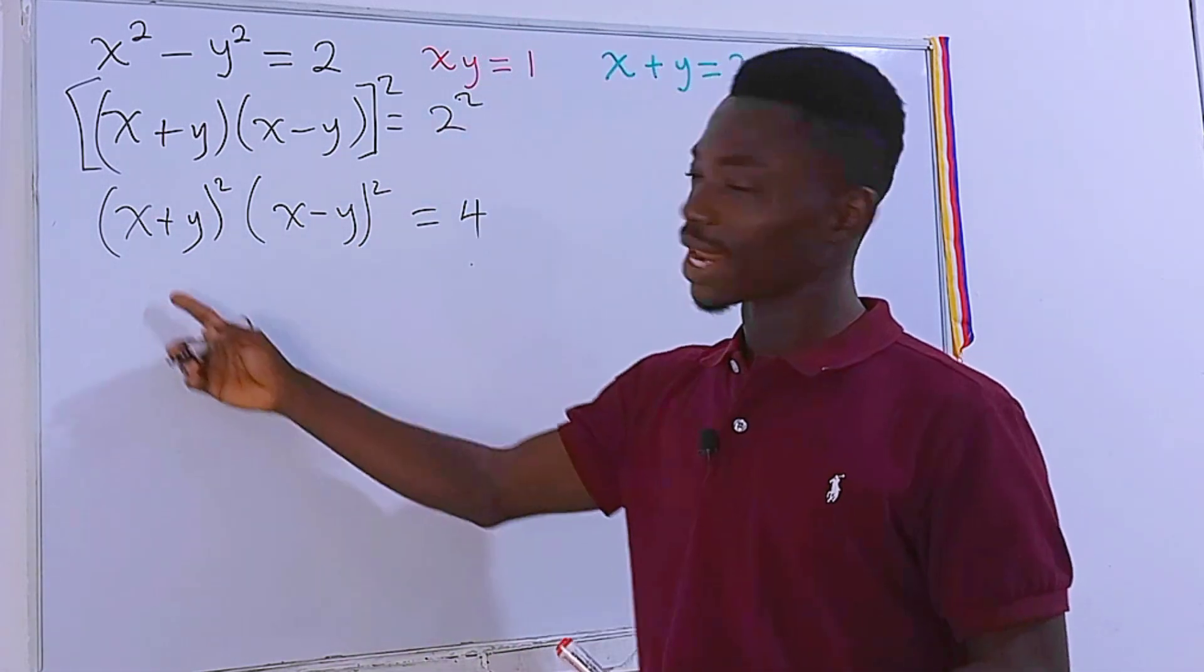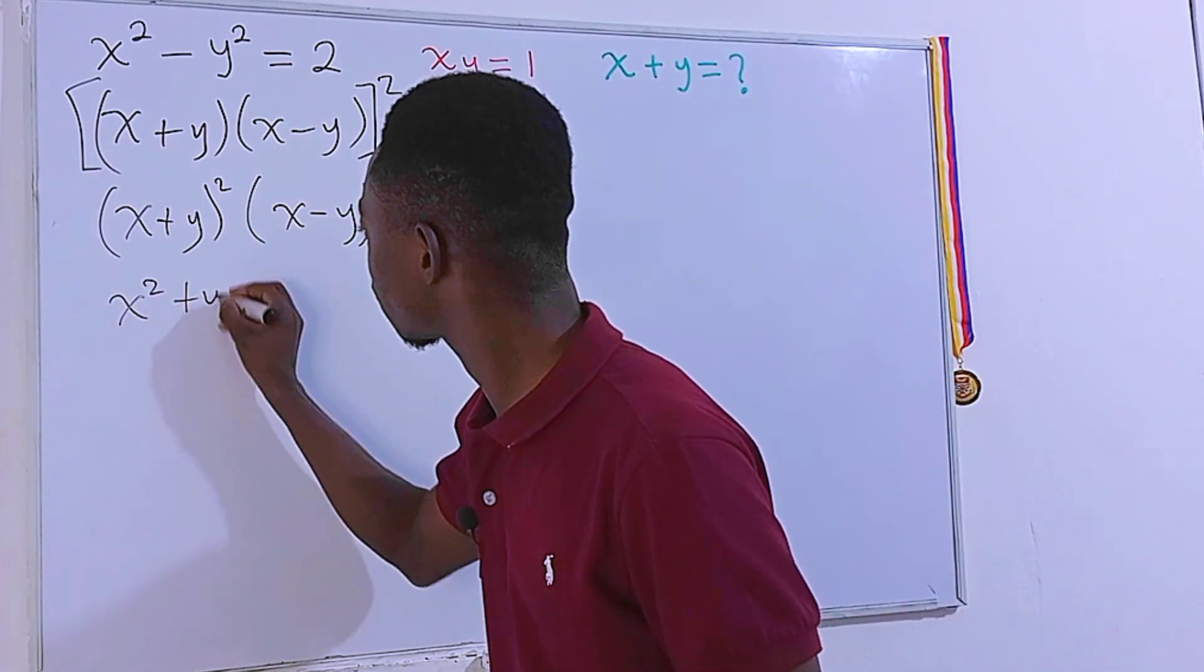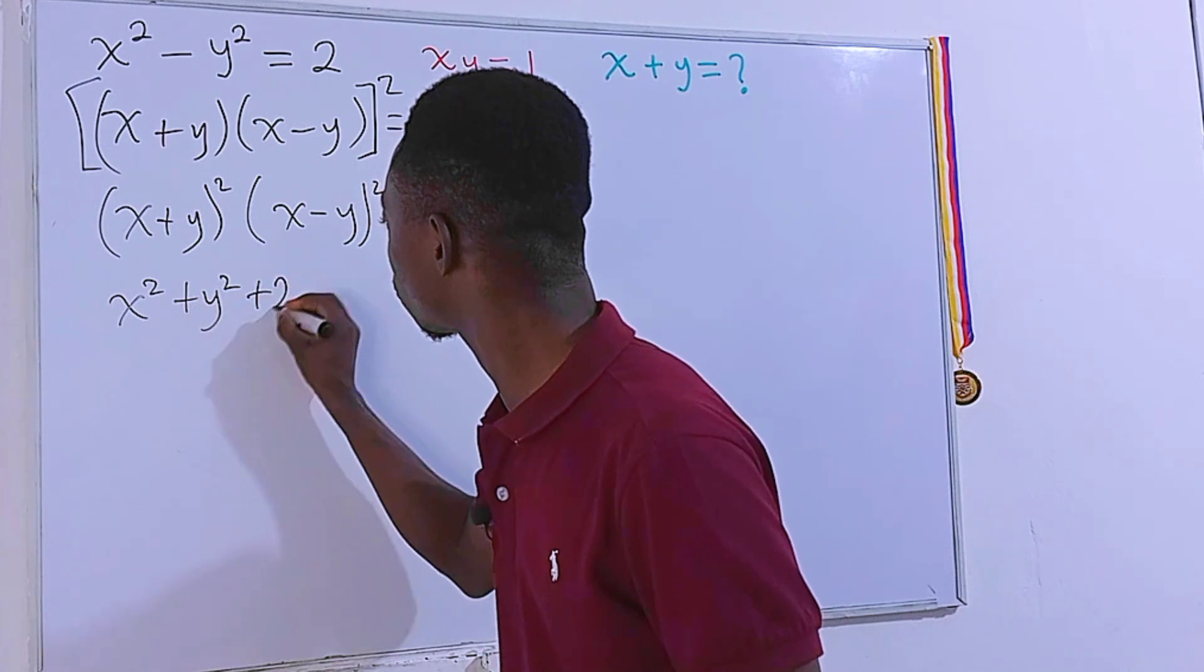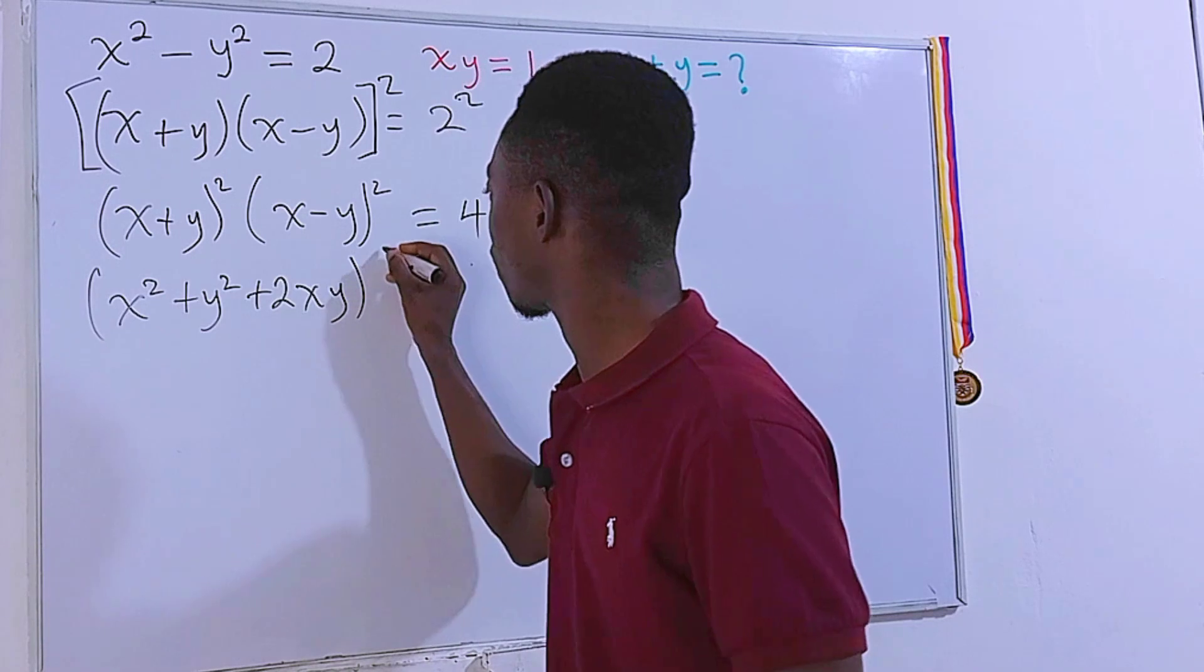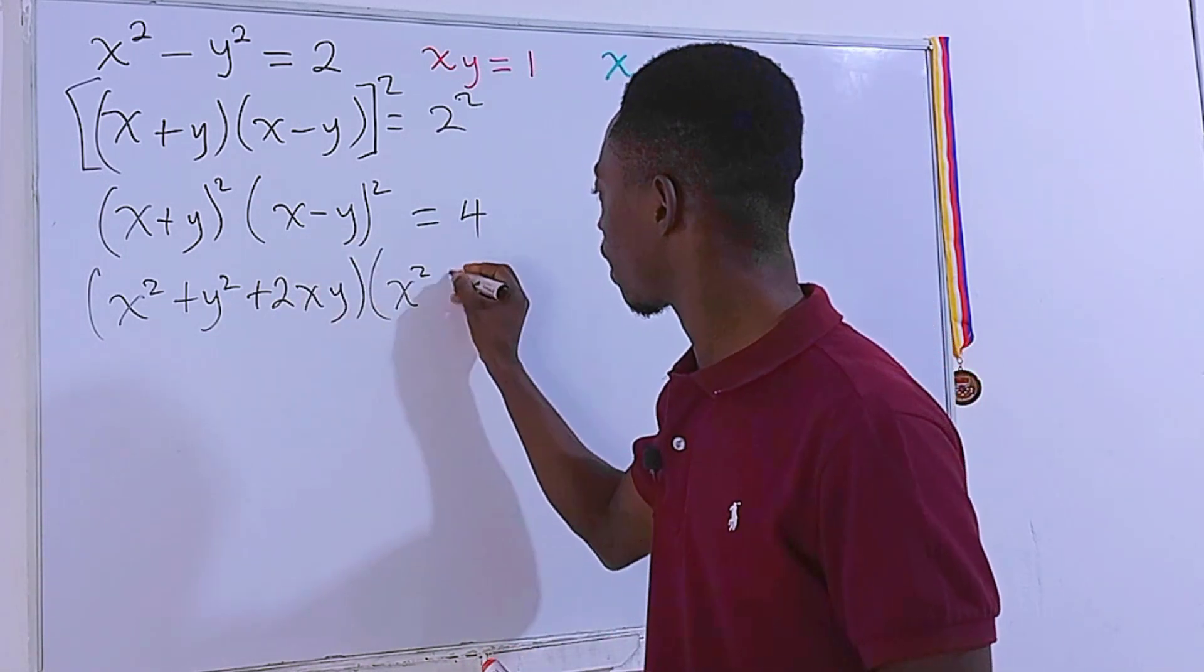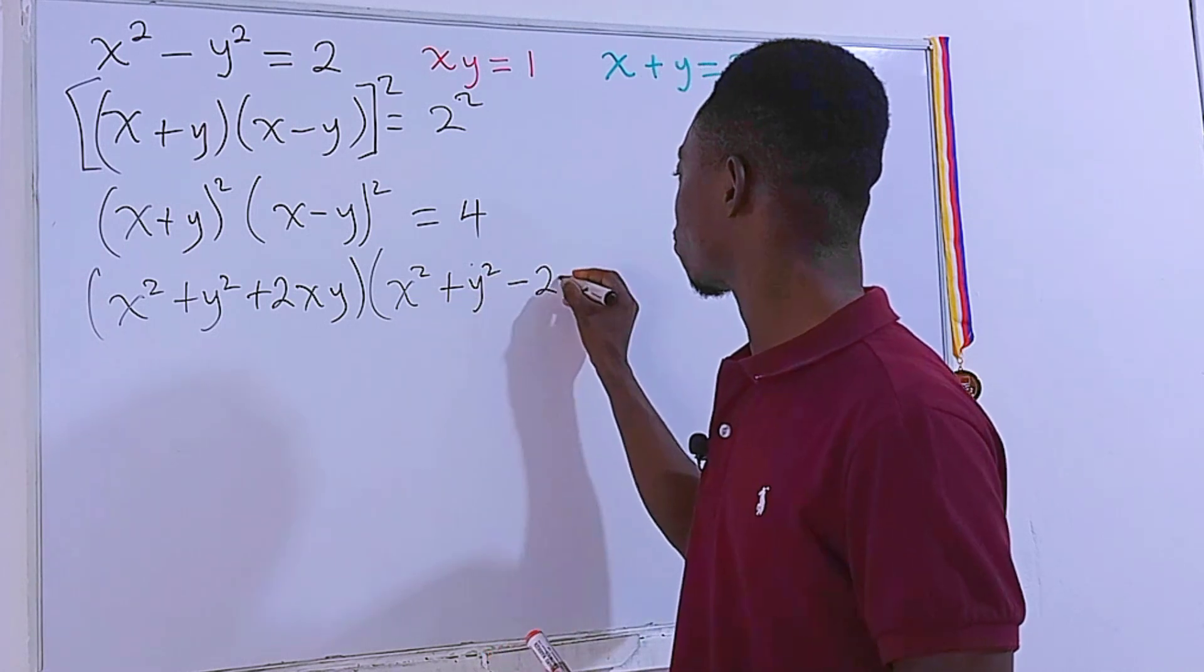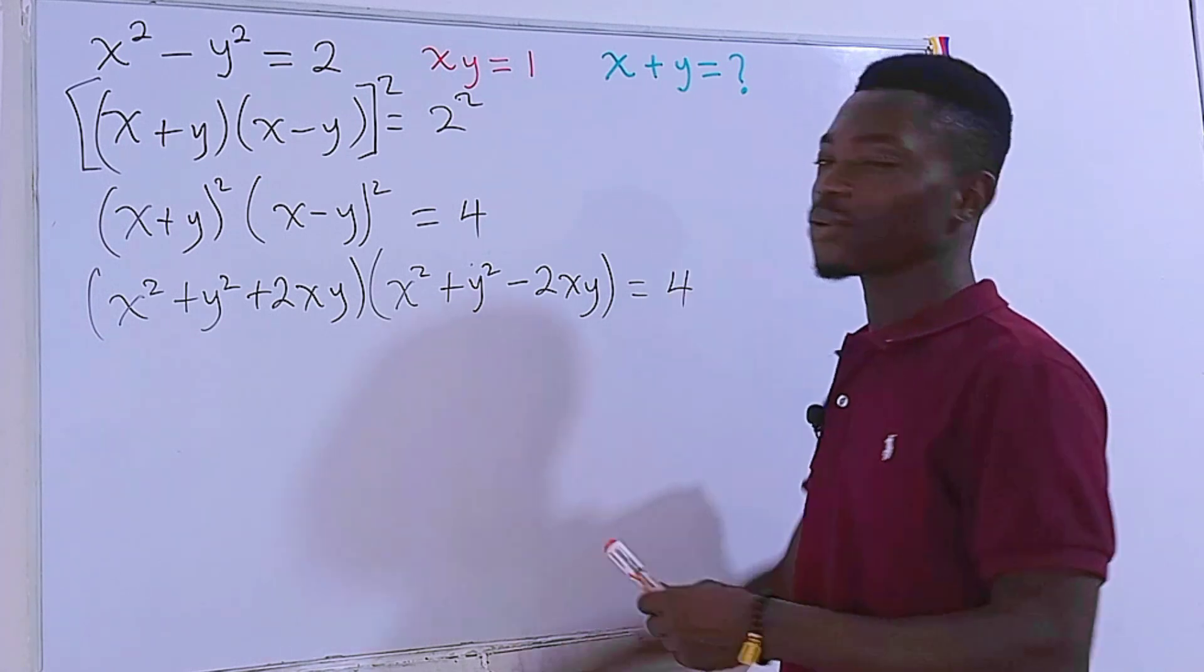And quickly, we can expand the left-hand side. We're going to have x squared plus y squared plus 2xy, then I'll put this one in parenthesis. Now, with this one, we also have x squared plus y squared minus 2xy, and this is 4.